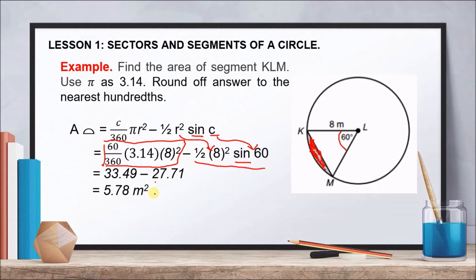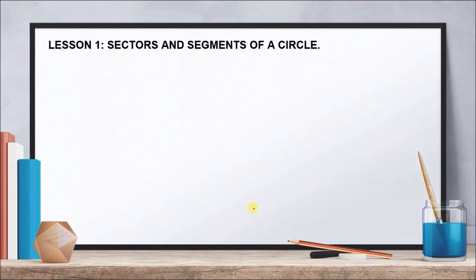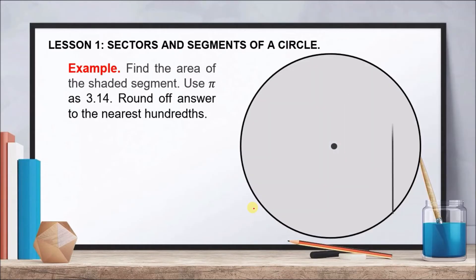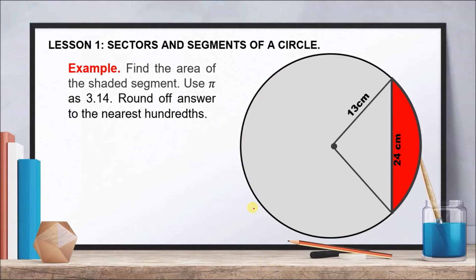Subtracting, we arrive at 5.78 square meters. Therefore, the area of segment KLM is 5.78 square meters. Now, what if the central angle is not given? In some problems, only the radius and the chord length bounding the segment are given, so we need a broader computation to find it.